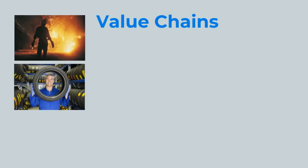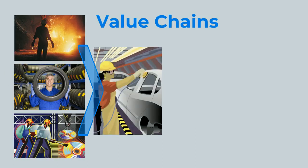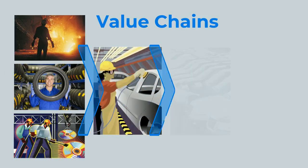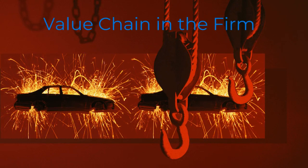Markets are structured in value chains. For example, a steel mill, a tire manufacturer, and labor are all inputs to an auto manufacturer, who in turn sells to dealerships, who in turn sells to consumers. At each stage in the value chain, someone's creating value, hopefully. There's a value chain inside the firm too.